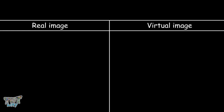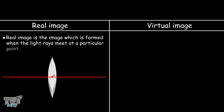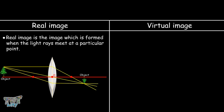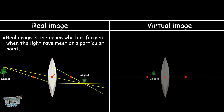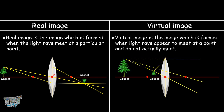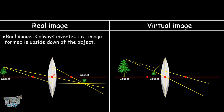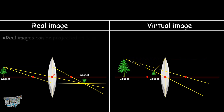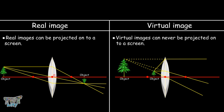We also learnt the difference between real images and virtual images. A virtual image is formed when light rays appear to meet at a point but do not actually meet, and a virtual image is always upright. A real image is always inverted. Real images can be projected onto a screen, but virtual images can never be projected onto a screen.